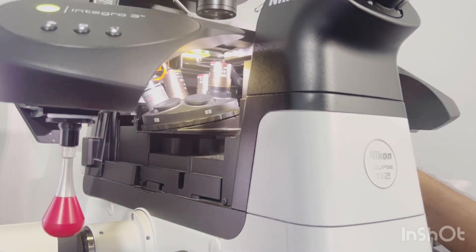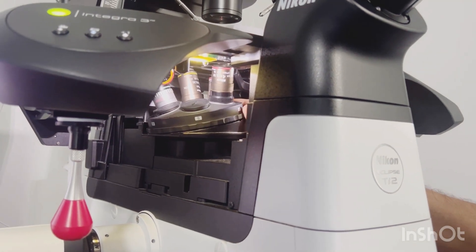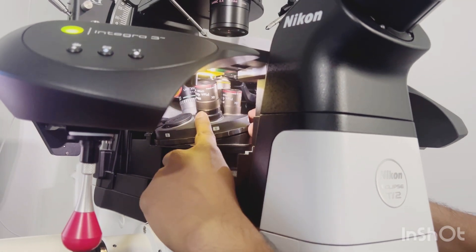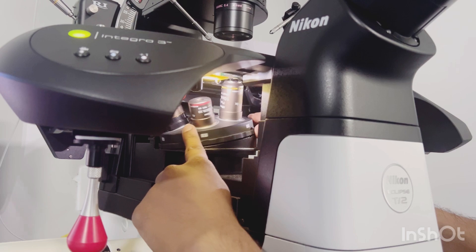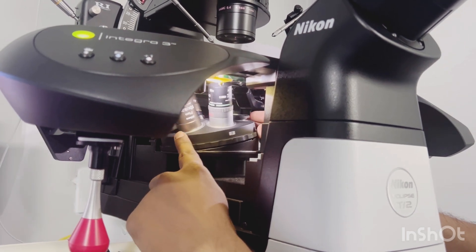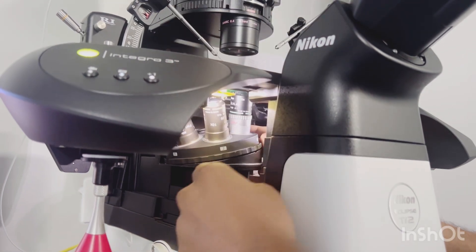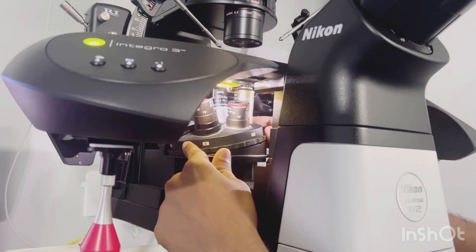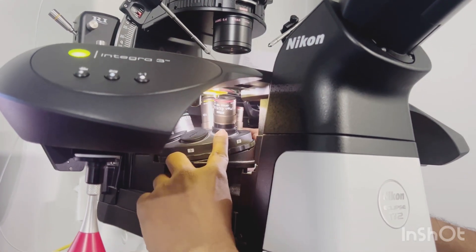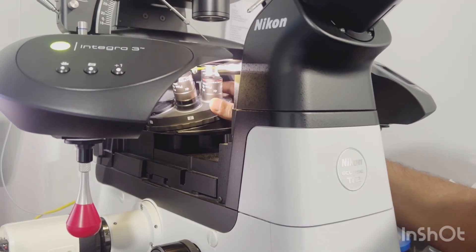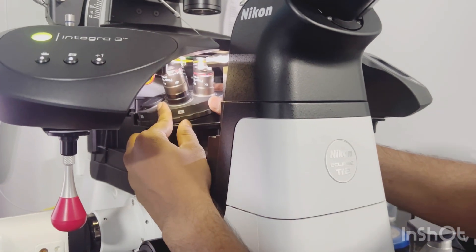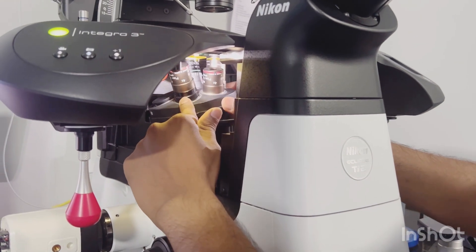Basically, we have four objectives: first one is 4x, next one is again 4x, then 10x, and 20x. When our lever is at the upside position, we have to arrange our microscope at this long 4x objective for initial alignment.